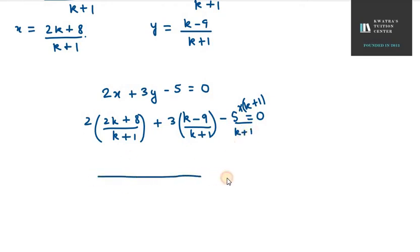So at the bottom, we have k plus 1. We will expand the brackets here. We will multiply 2 with 2k, you will get 4k. 4k plus 8 into 2 is 16. Then we have 3 into k, it is 3k. Then we have 3 into 9, which is 27. Then you have 5 into k minus 5k. Then you have minus 5 equals 0.